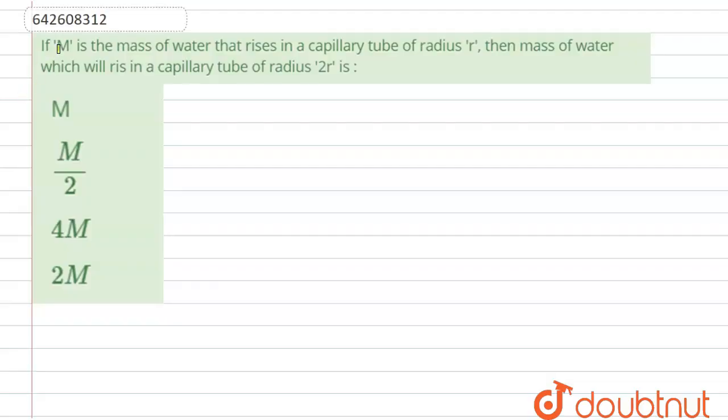Hello everyone, the question says that if m is the mass of water that rises in a capillary tube of radius r, then mass of water which will rise in the capillary tube of radius 2r is?